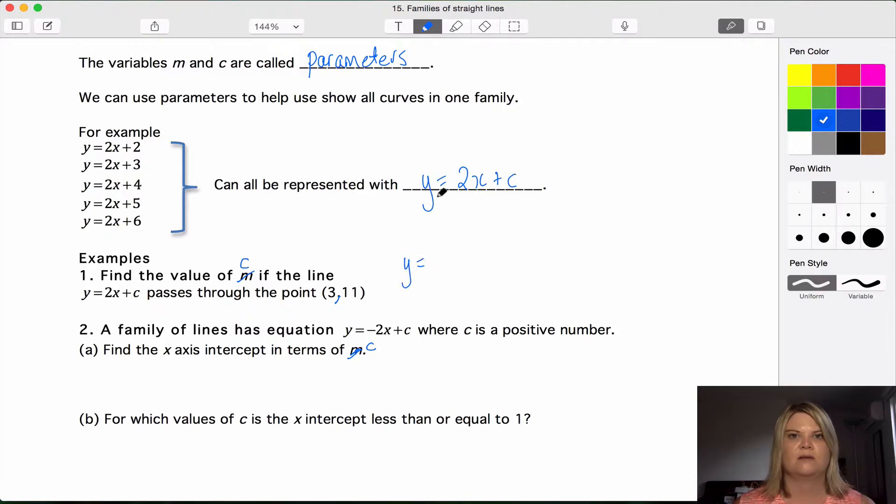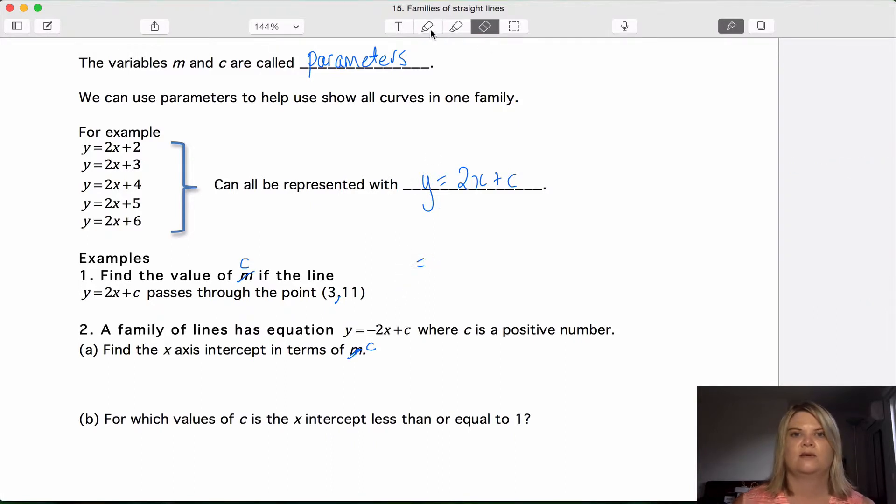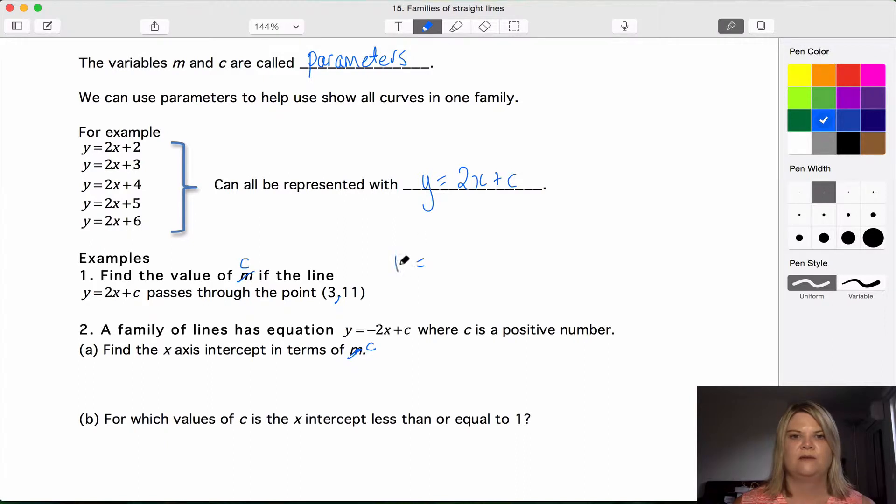So what we can do is put this in for x and this in for y and rewrite this equation. So we get y, instead of y we'll put 11 equals 2 times x which is 3 plus c. 6 plus c, 11 take 6 is 5, c equals 5. So we've found the value of c.